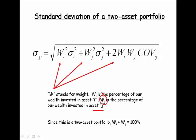For a two-asset portfolio, which is what we have here, all of our wealth is invested in those two assets. So W_I and W_J represent 100% of our wealth.